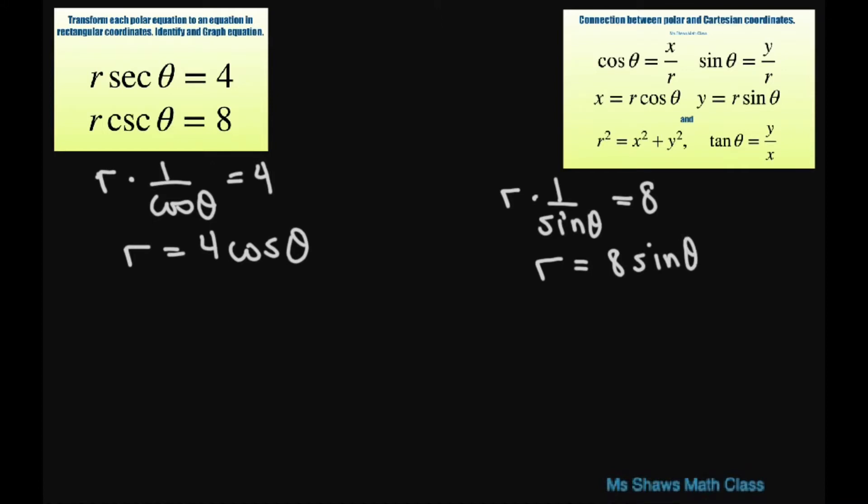Now these are circles and we'll look at that after we get our rectangular coordinates. To get the rectangular coordinates, you multiply through by r. You get r squared equals 4r times cosine of theta. Now let's use substitution: r squared is x squared plus y squared equals 4, and r cosine of theta equals x.